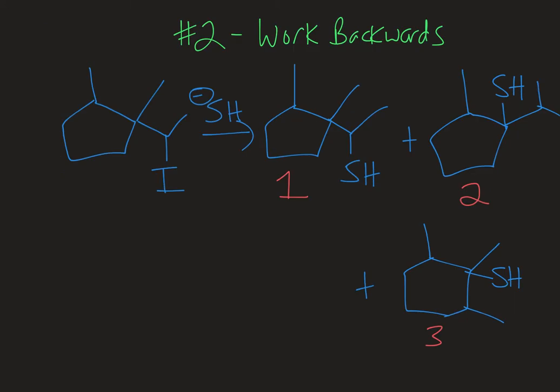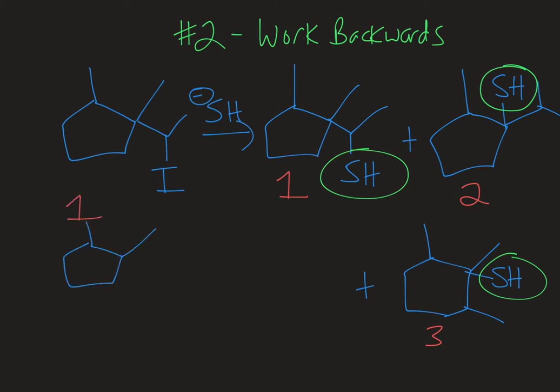I've redrawn our reaction scheme and labeled the products one, two, and three. The next tip is to work backwards. It can often be hard to start from just a reactant and go all the way to the product, especially when a rearrangement is happening. But if we look at our products we can work backwards to figure out what carbocation intermediate must have been present to form that — because wherever the nucleophile ended up, that's where the carbocation must have been in an SN1 type reaction. So for product one, the carbocation must have been right where the nucleophile ended up, which is also where the leaving group originally left from. So this would be the first carbocation we would see.